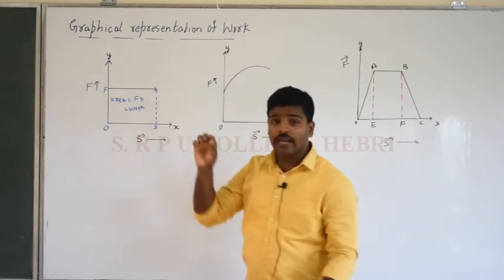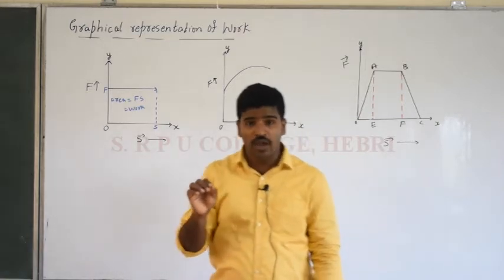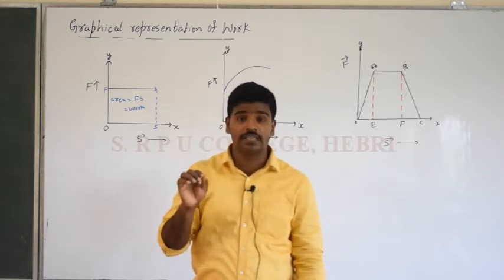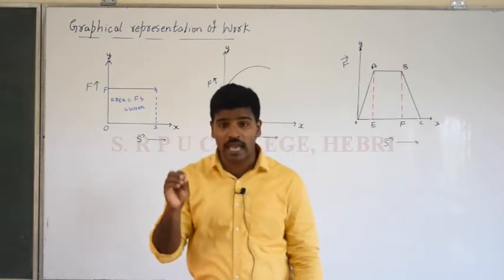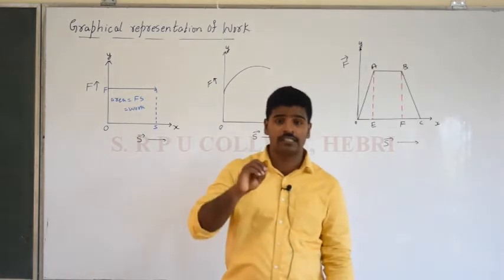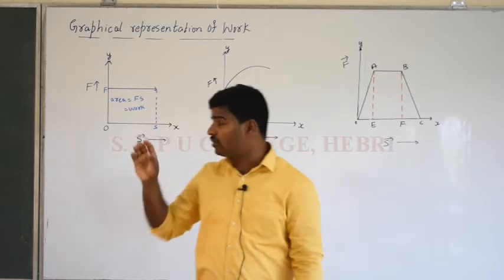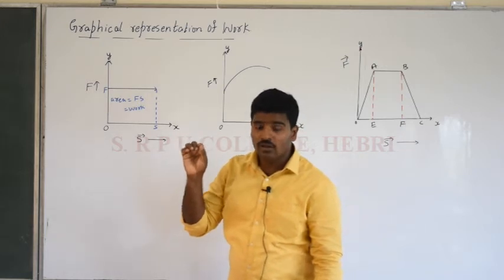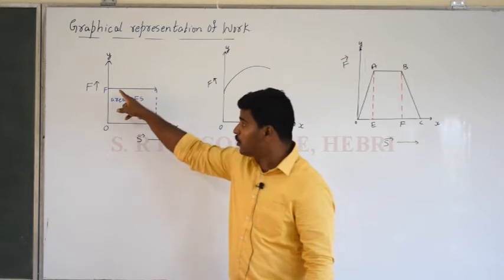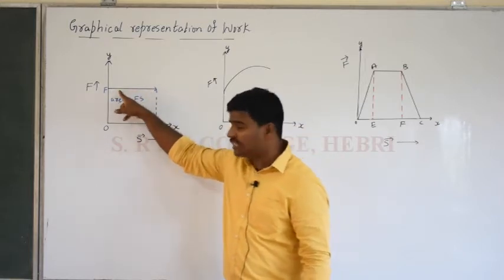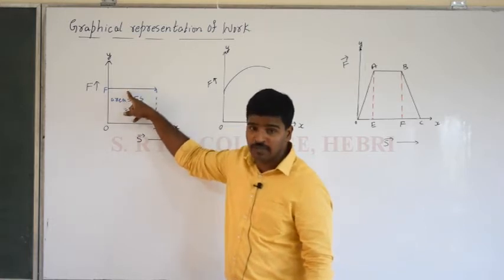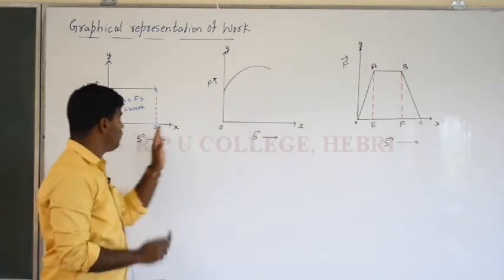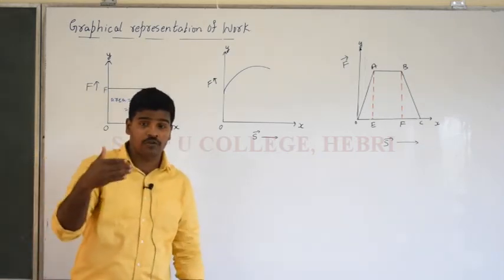In the first graph, let a constant force F vector act on a body producing displacement S vector along the horizontal direction (x-axis). The force-displacement graph shows this displacement as a line parallel to the x-axis. The area under the curve in this first diagram, where constant force is applied, represents the work done.